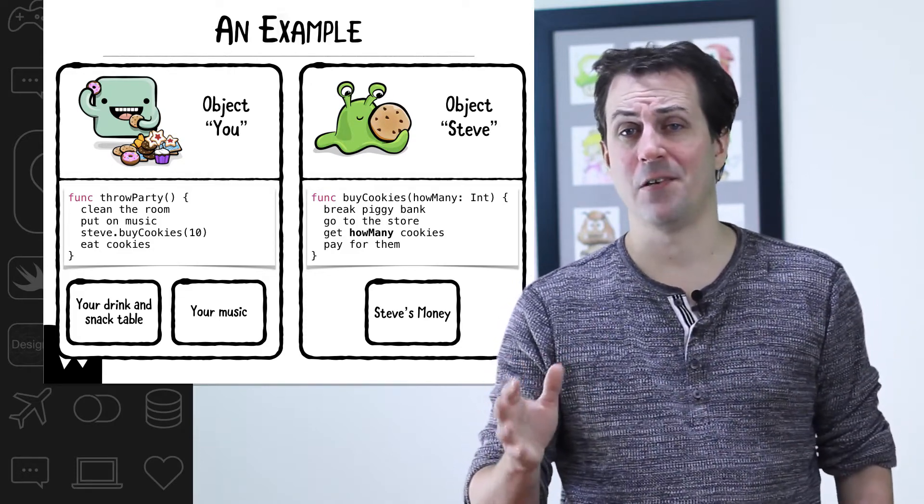Now if Steve eats all the cookies along the way, your app has a bug. Sending messages sounds a lot more complicated than it really is. Sending messages is a nice conceptual way to think about how objects communicate, but really all that's going on is the computer switches over from the throw party method to the buy cookie method and then back again.